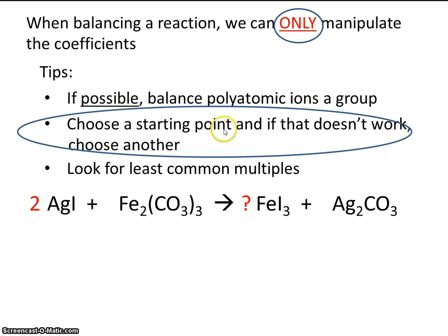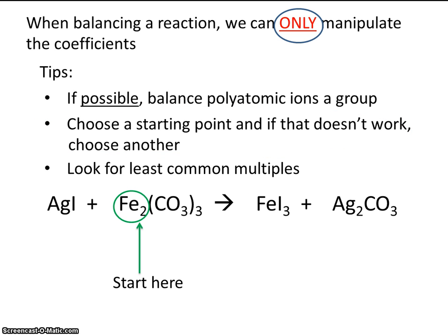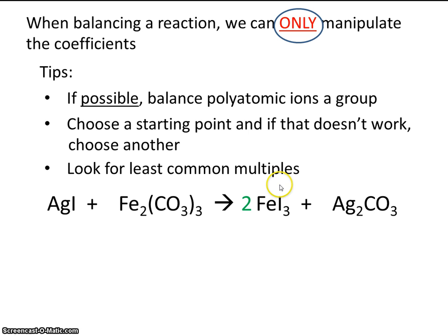That really doesn't work. So we chose a starting point, and that didn't work out so well. Let's go ahead and choose another starting point and see if that will be any easier. Let's start at iron this time. You can see we have two irons on the left, so that means we need to make two irons on the right. But now we have two times three — we have six iodines. So if we have six iodines on the right, that means we're going to need six iodines here on the left.